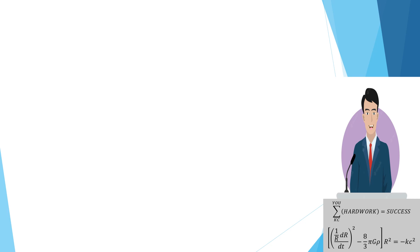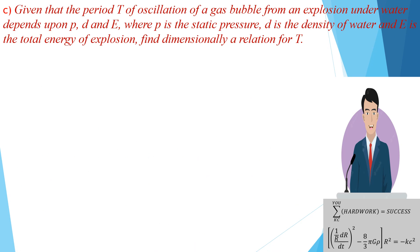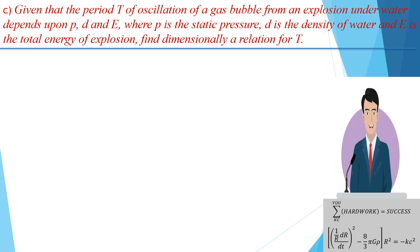Let's move to part C: given that the period T of oscillation of a gas bubble from an explosion underwater depends upon p, d, and E — where p is static pressure, d is density of water, and E is total energy of explosion — find the dimensional relation for T. This problem closely resembles one I gave students back in 2020 when I taught in BGS summer holidays, and again in 2021.